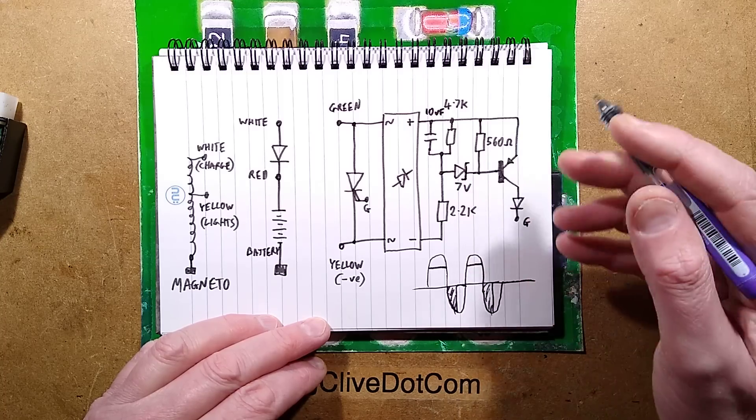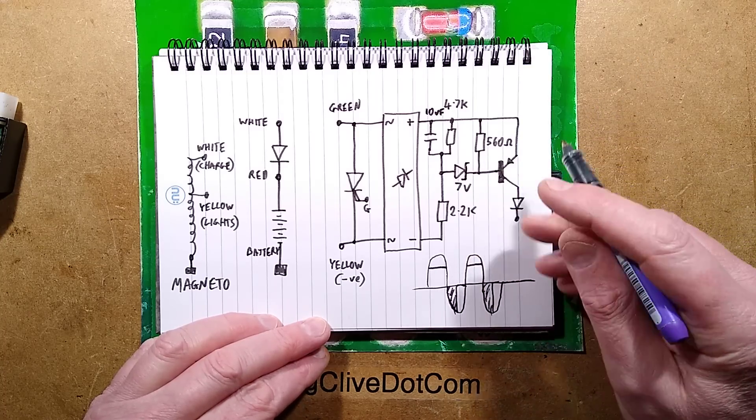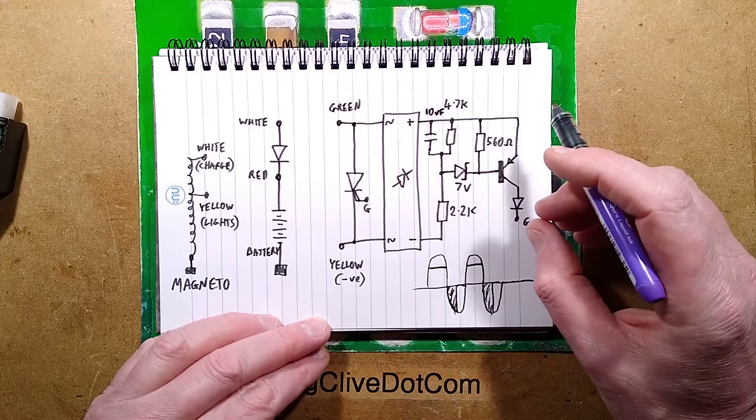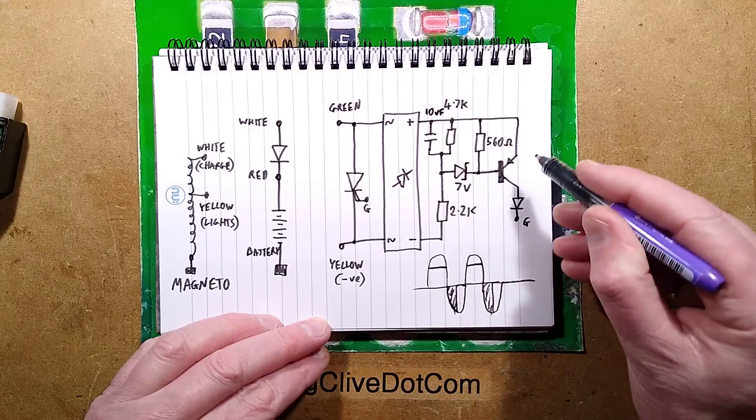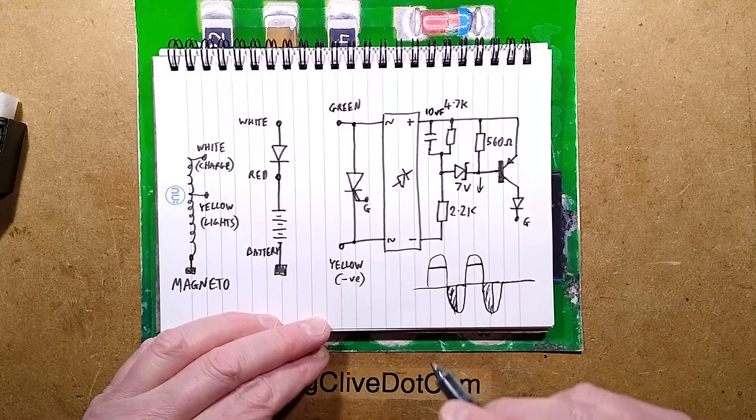I'd have to actually see it running on an actual bike. But there's a 7 volt zener diode, and as soon as its voltage is exceeded, the base of this transistor starts getting pulled down to the negative rail. It turns on and it shunts out.